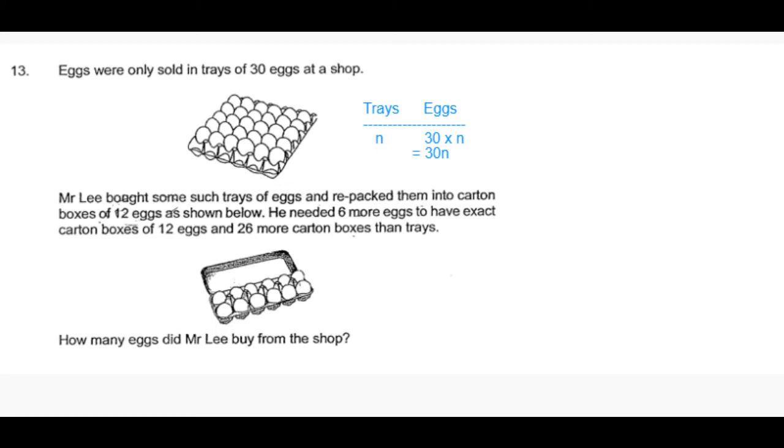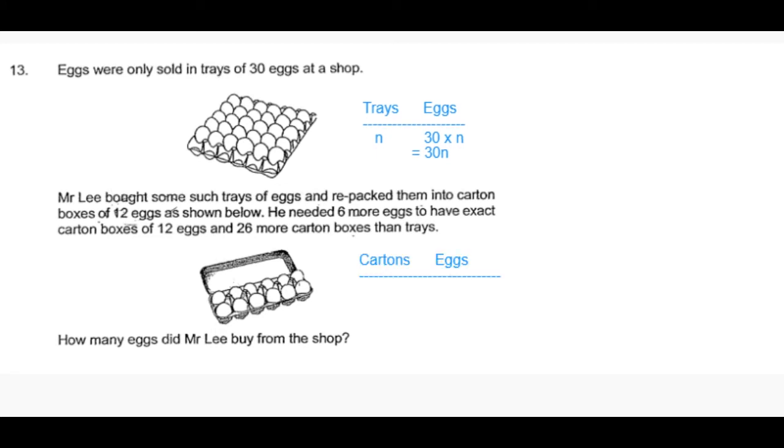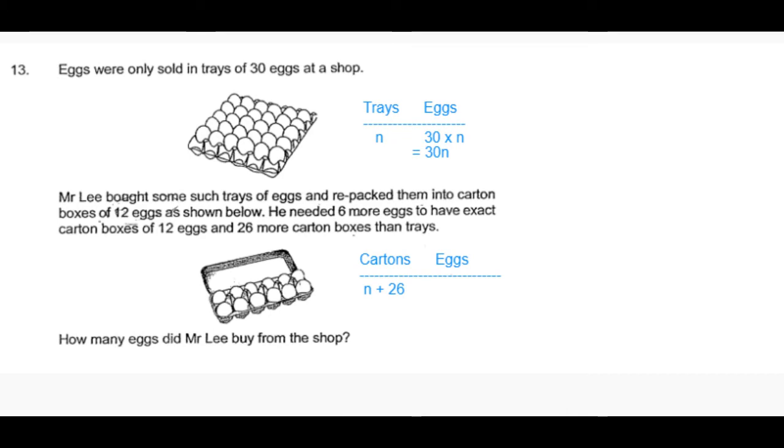Let's now see how many cartons he can repack them into. The number of carton boxes is given to be 26 more than the number of trays. We assume the number of trays to be equal to n, so the number of carton boxes should be n plus 26.